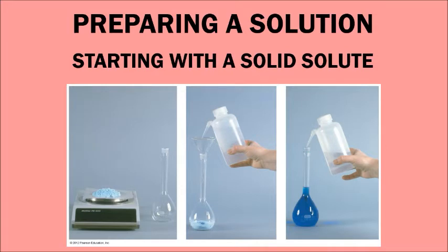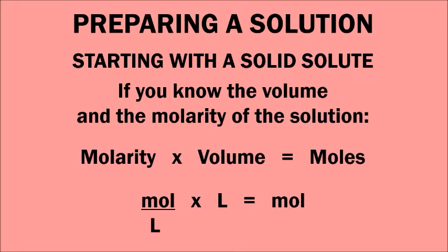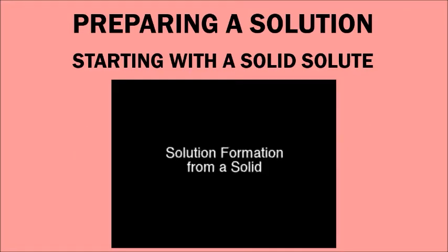To calculate the amount of solute needed, if you know the volume and the molarity, you simply multiply those two quantities together: molarity times volume in liters equals moles. Once you know the moles of solute, you can convert that to grams using the molar mass from the periodic table.